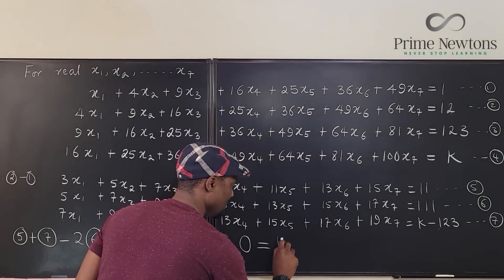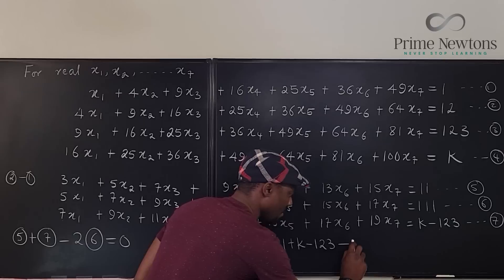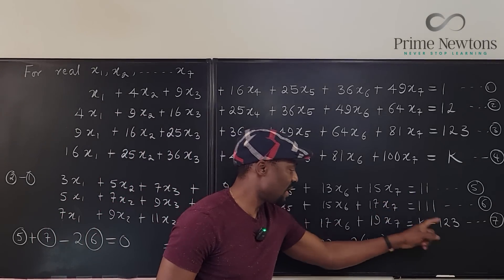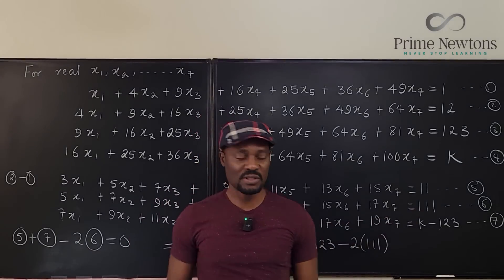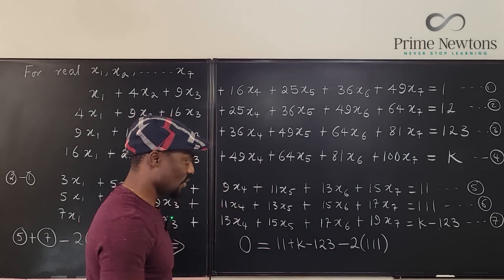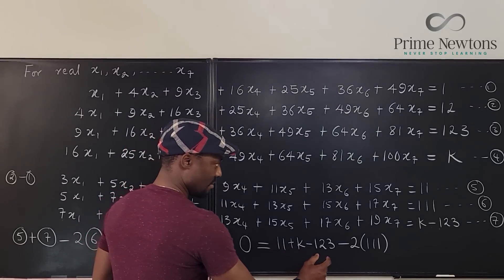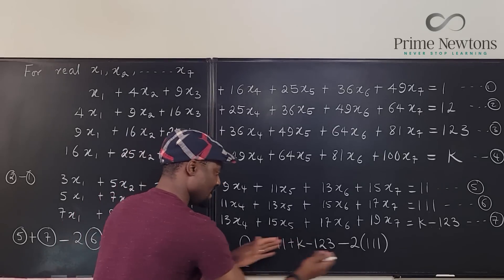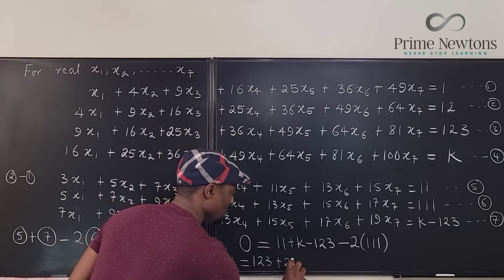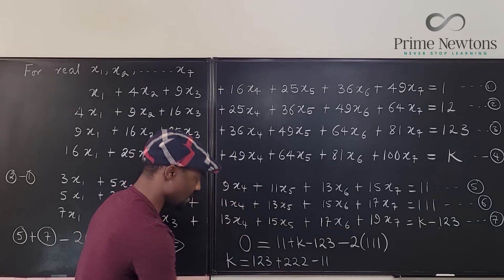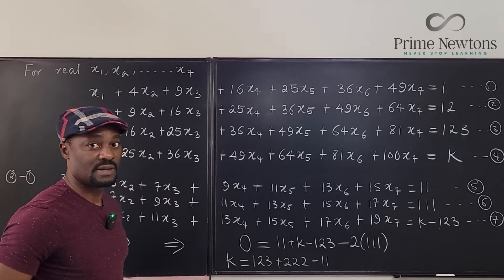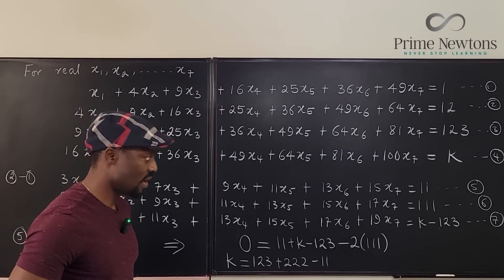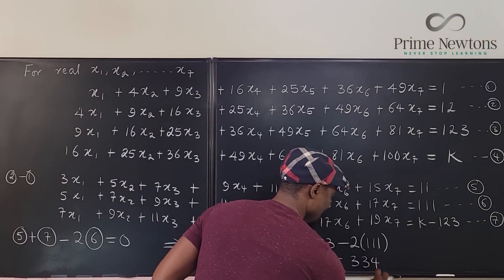This implies that 0 equals... doing the same thing on the right-hand side: it's going to be 11 plus k minus 2 times 123. So 11 plus k minus 2 times 123 equals 0, which means 11 plus k minus 246 equals 0. So k equals 123 plus 222 minus 11. Wait — 123 plus 222 is 345. 345 minus 11 is 334.